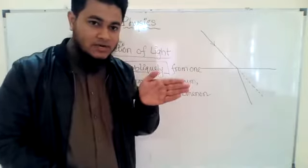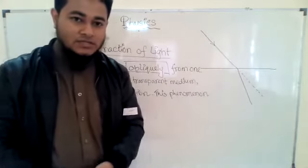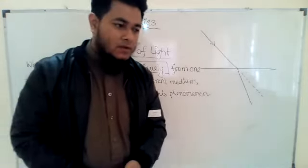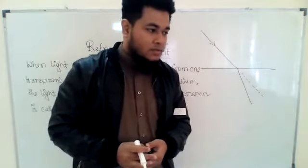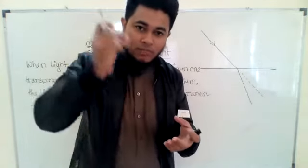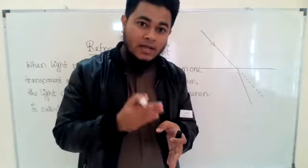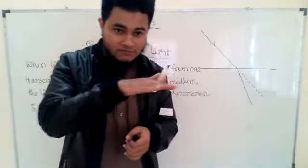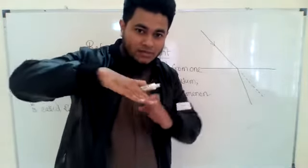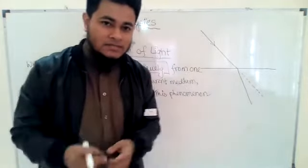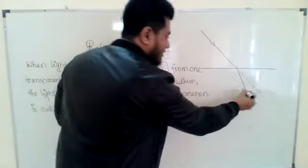Light generally travels in a straight line, but whenever it is changing the medium, we can see that it is changing its direction. A practical example: if you have a glass of water and put a pencil in it, it will appear that the pencil has been broken at the surface of separation — above which there is air and below there is water. This happens due to refraction of light.